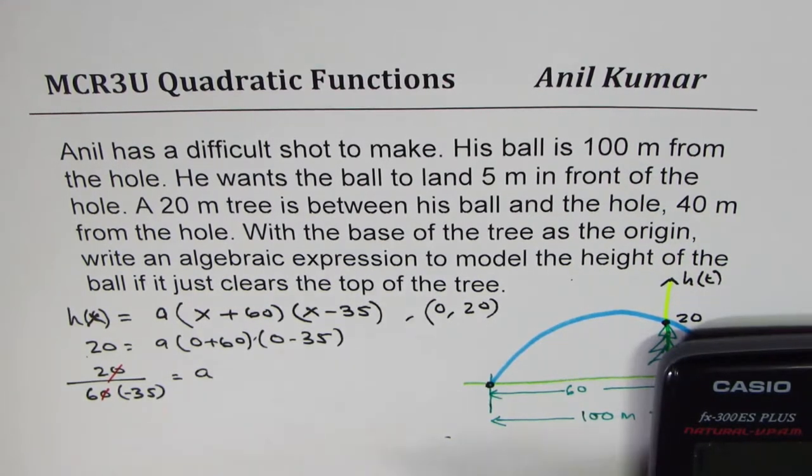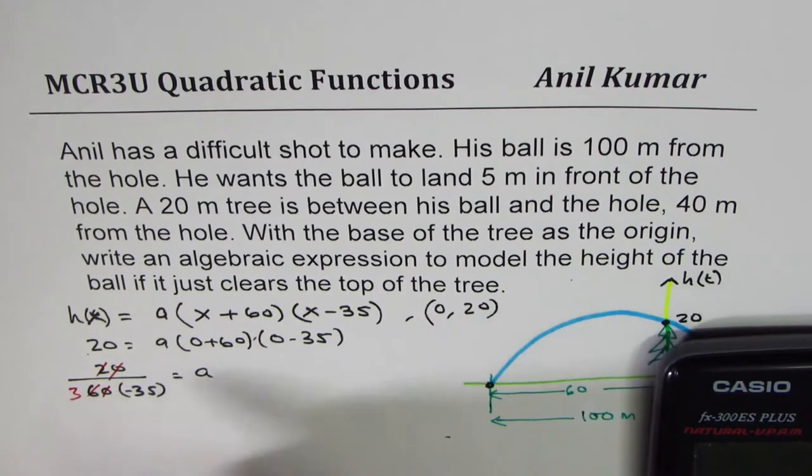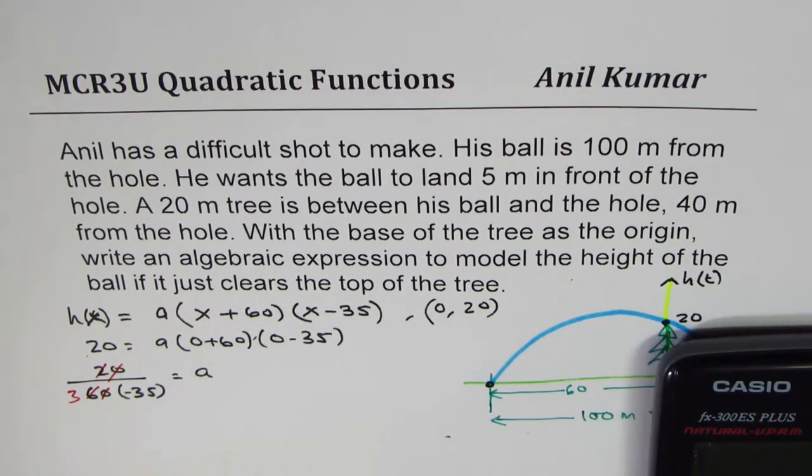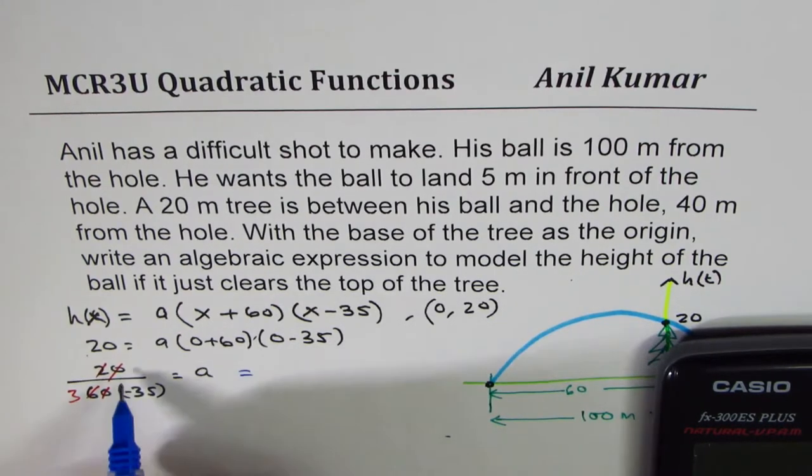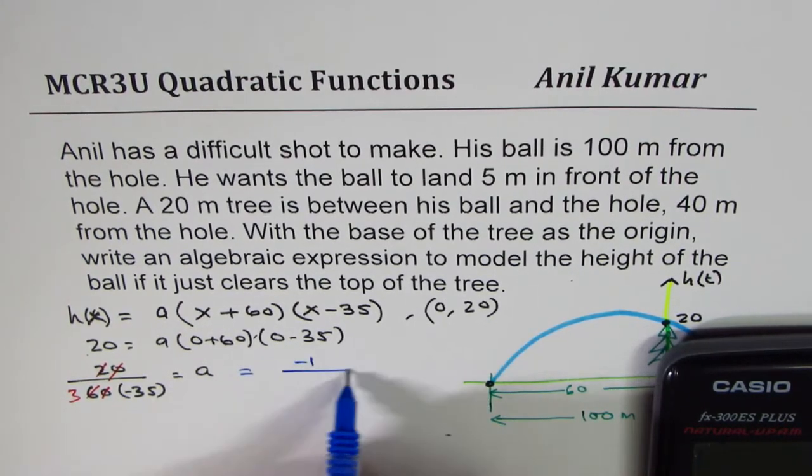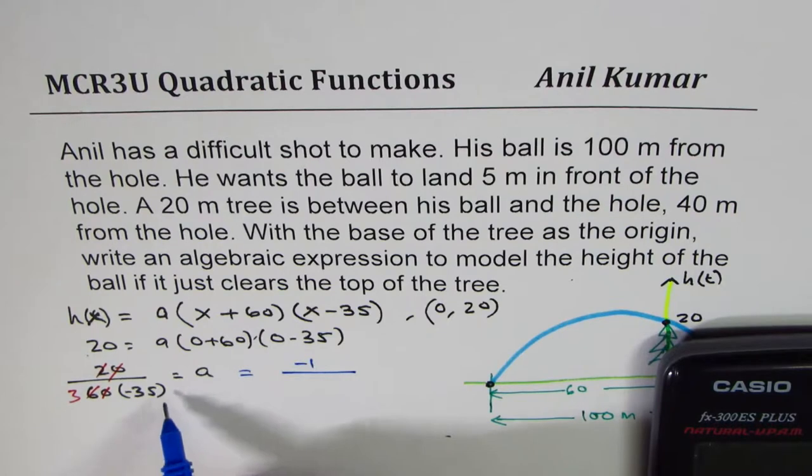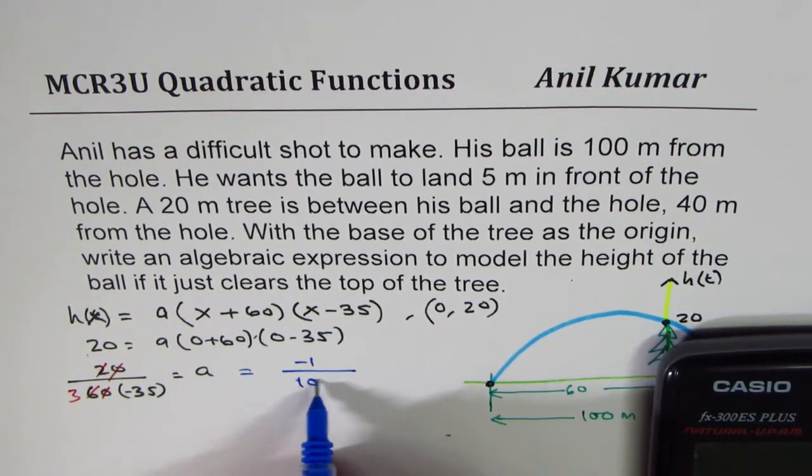So we could do 2 times 3. So we get a as equal to minus 1 over 3 times 35, which is 105.